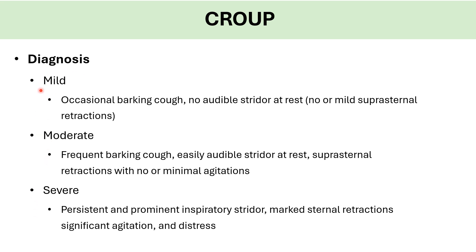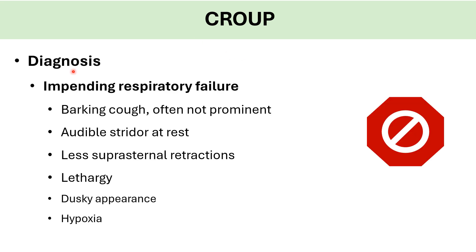Mild croup — the most common — presents with occasional barking cough, no audible stridor at rest, and no or mild suprasternal retractions. Moderate croup presents with frequent barking cough, easily audible stridor at rest, and suprasternal retractions with no or minimal agitation. Severe croup and impending respiratory failure — do not miss this.